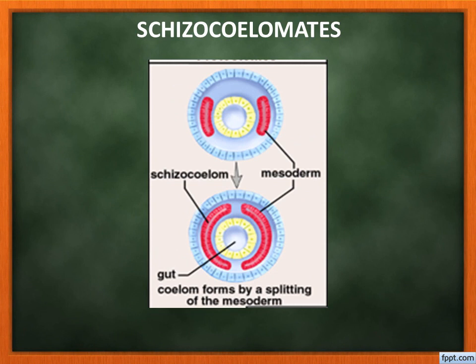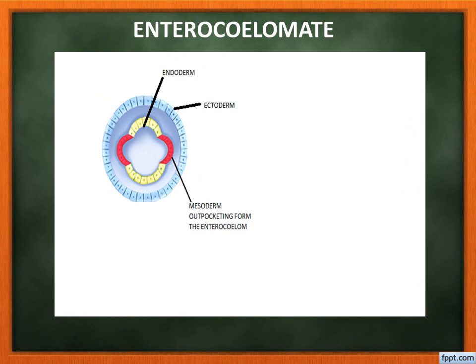Eucoelomates are further divided into two: schizocoelom and enterocoelom. In schizocoelom, the coelom is formed from splits within the mesoderm layer itself. This is found in Annelida, Arthropoda, and Mollusca. In enterocoelom, the coelom is formed from pouches of the mesoderm layer — called archenteron pouches. This is found in Echinodermata, Hemichordata, and Chordata.